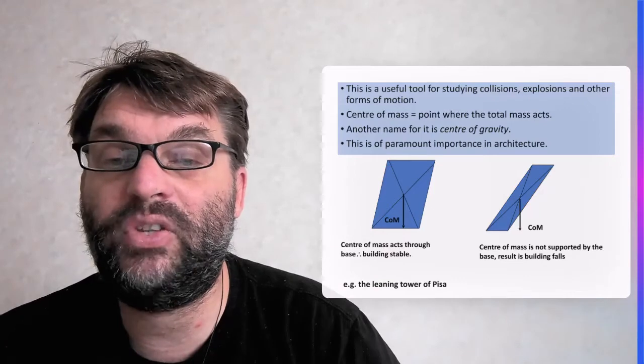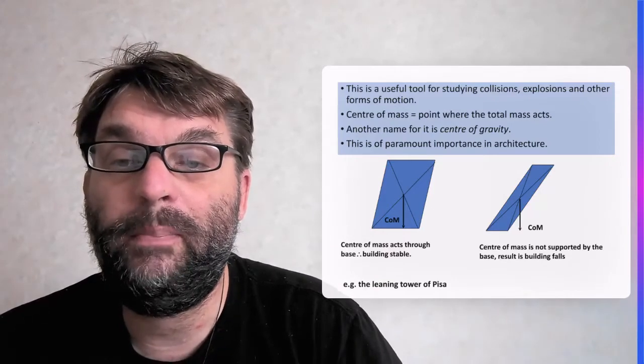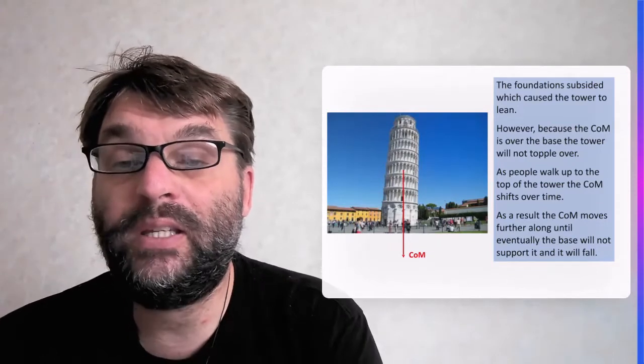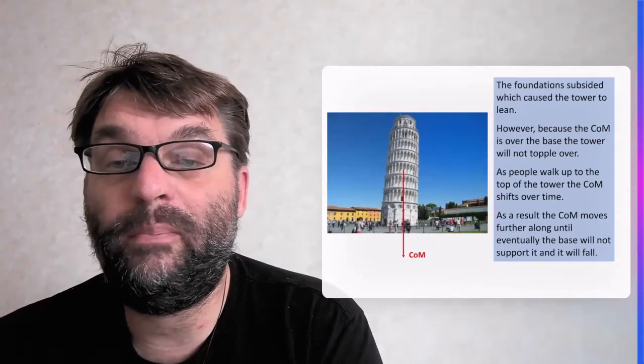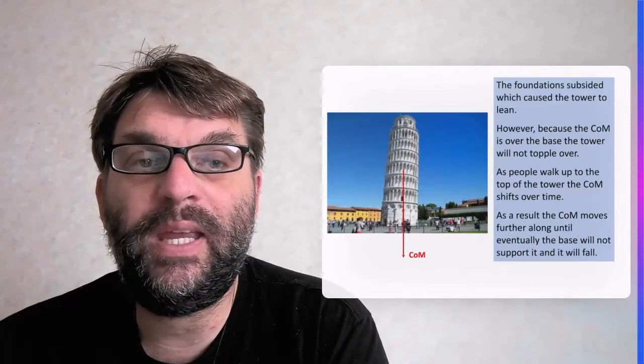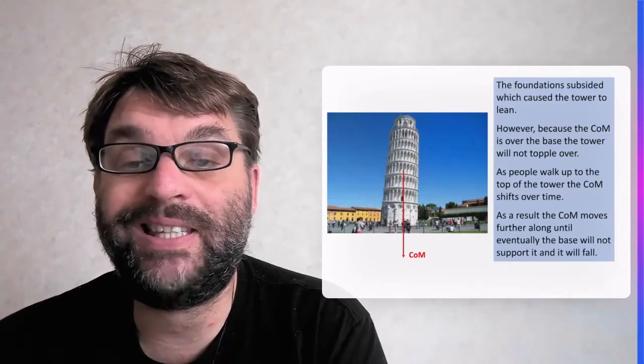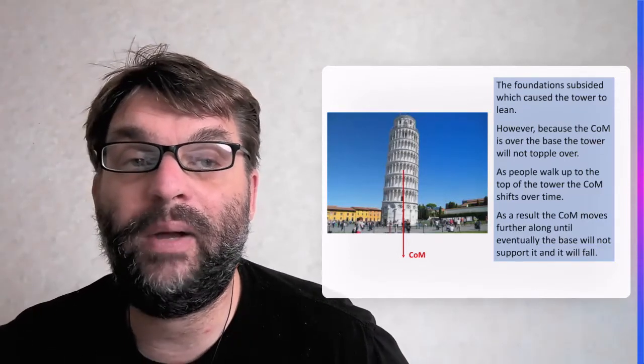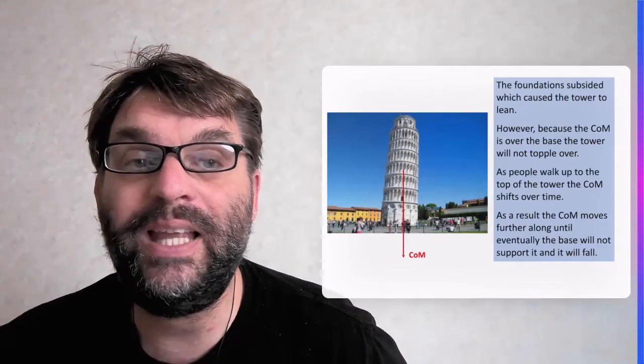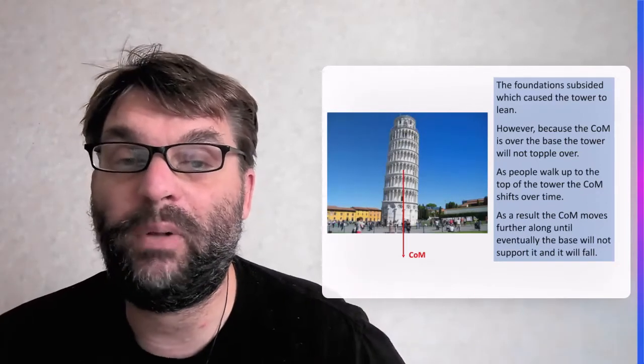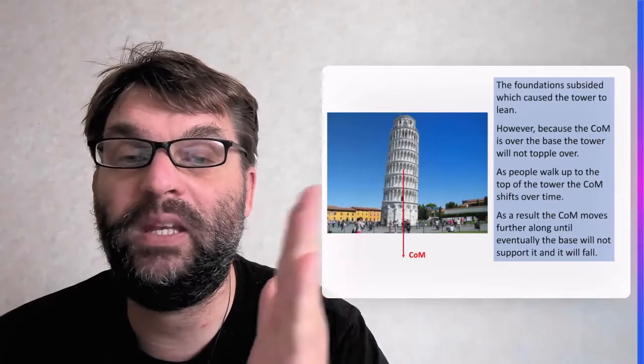An example of that is the Leaning Tower of Pisa. You can see at present the Centre of Mass is over the base, which means that it's nice and stable. But of course the foundations on which the Leaning Tower are based are causing the tower to lean - they've subsided, and as people go up, obviously that applies mass and it's going to just slowly bend over.